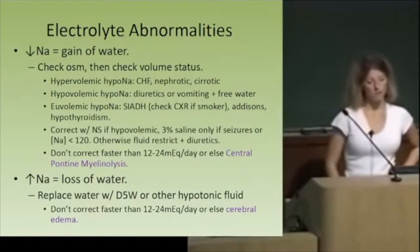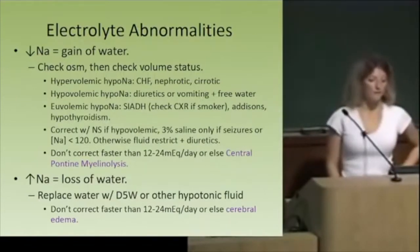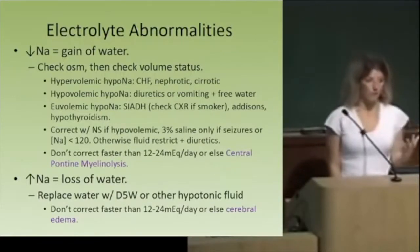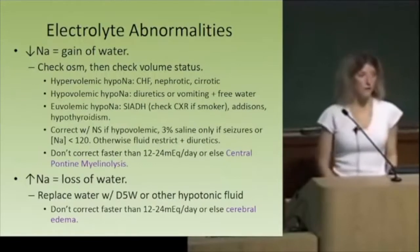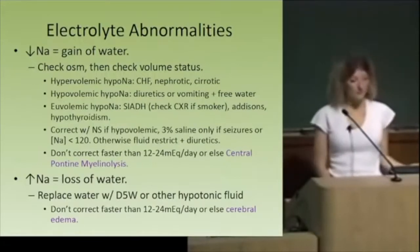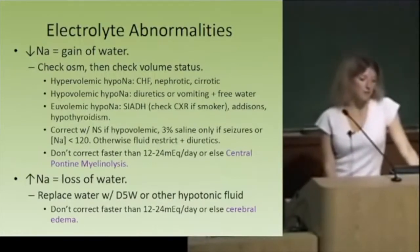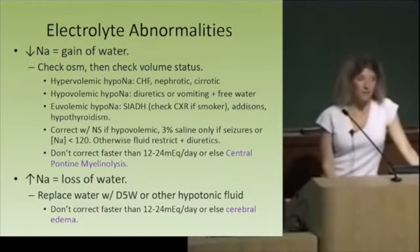Some causes of hypervolemic hyponatremia: congestive heart failure, nephrotic syndrome, and cirrhosis. Hypovolemic hyponatremia is when you're losing a lot of fluids, either by taking too much Lasix or vomiting. And then euvolemic hyponatremia — the main thing it should make you think of on the test is SIADH.